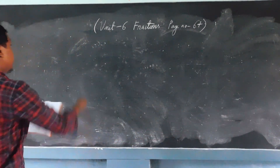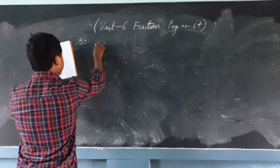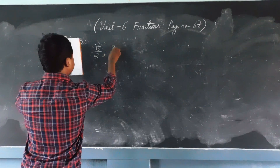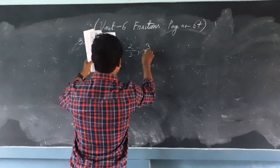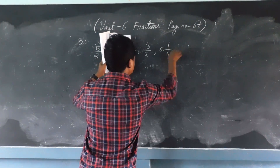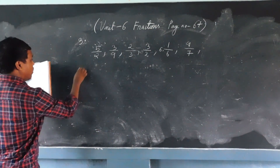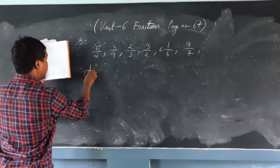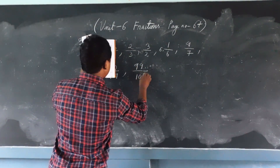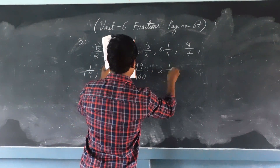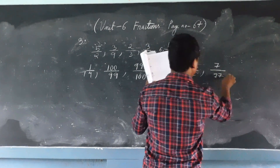Question number 3. The fractions given are: 5/2, 3/9, 2/3, 3/2, 6 and 1/6, 9/7, 1 and 1/4, 100/99, 99/100, 2 and 1/2, 77/7, and 7/77.